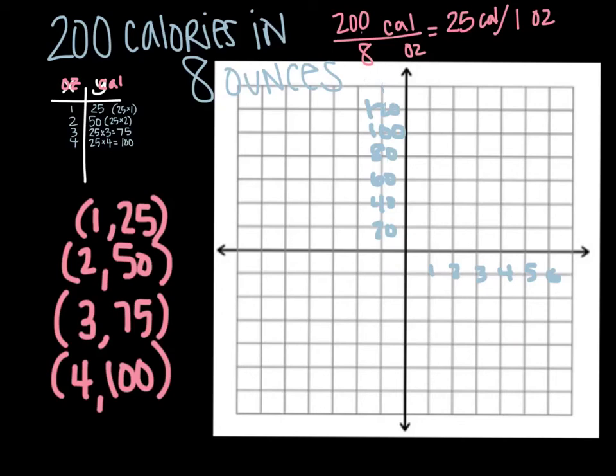So I have 1, 25. That's going to be about right here. If I had 0, it would be 0, 0. So we're going to put that there. If I have 0 ounces, I have 0 calories.